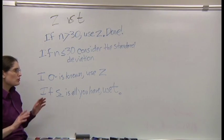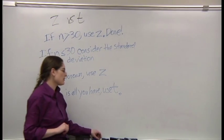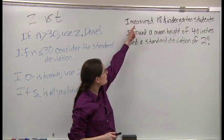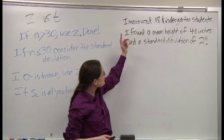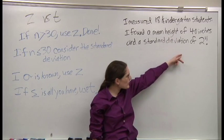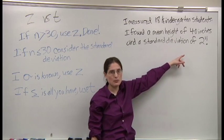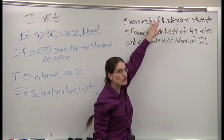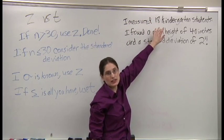Let's look at two similar but slightly different examples. I measured 18 kindergarten students. I found a mean height of 40 inches and a standard deviation of 2 inches. Where did this standard deviation come from? From these children, just these children.